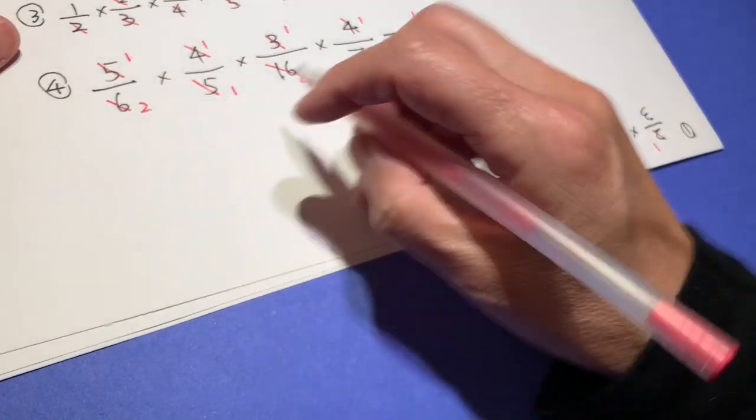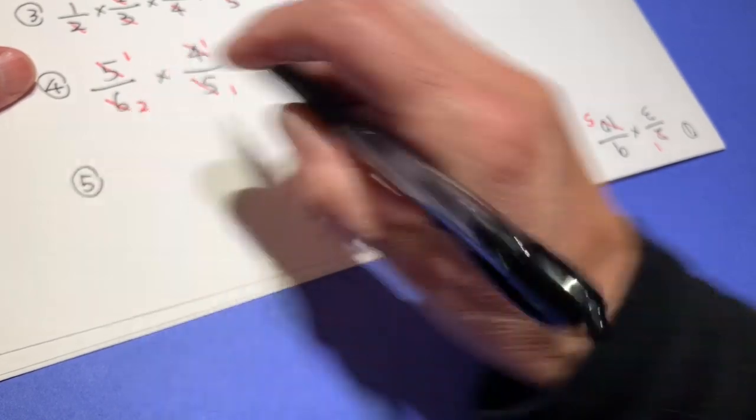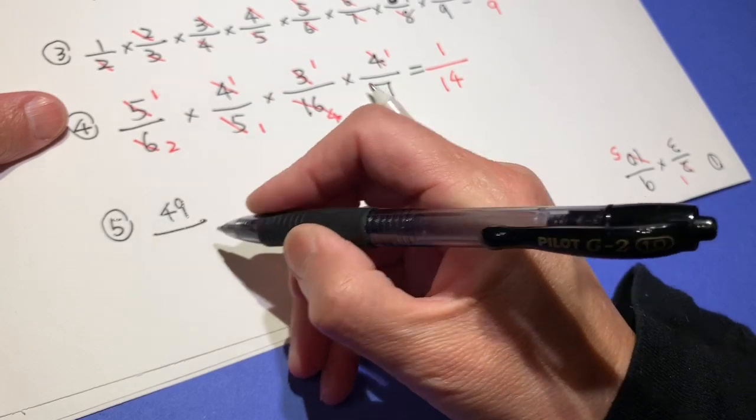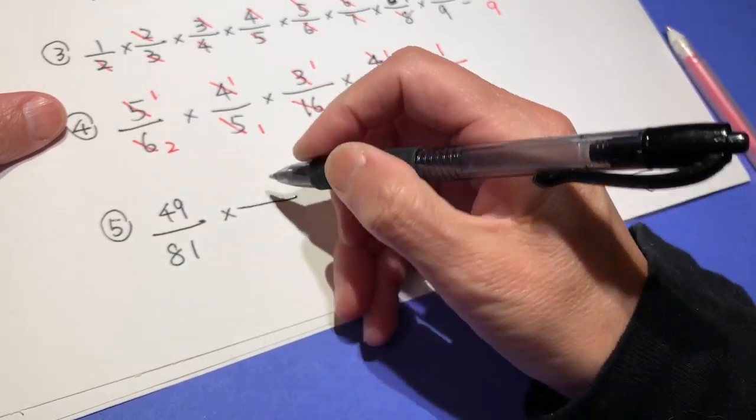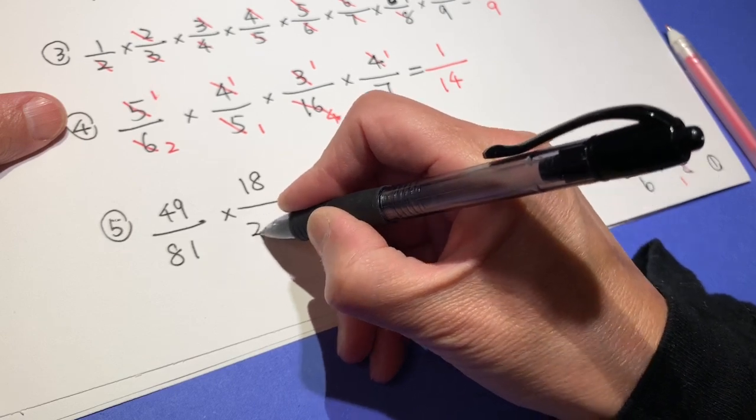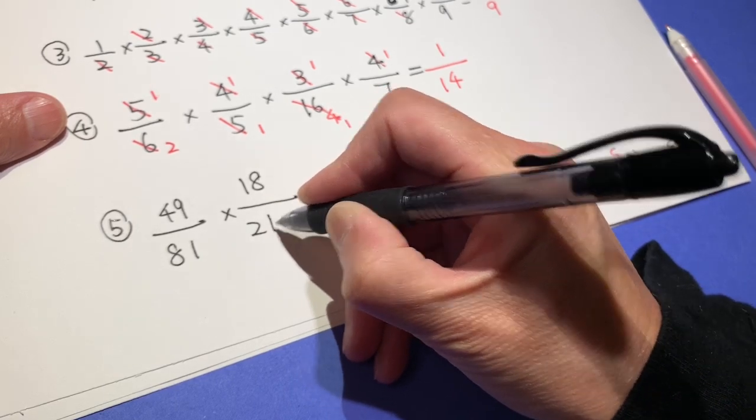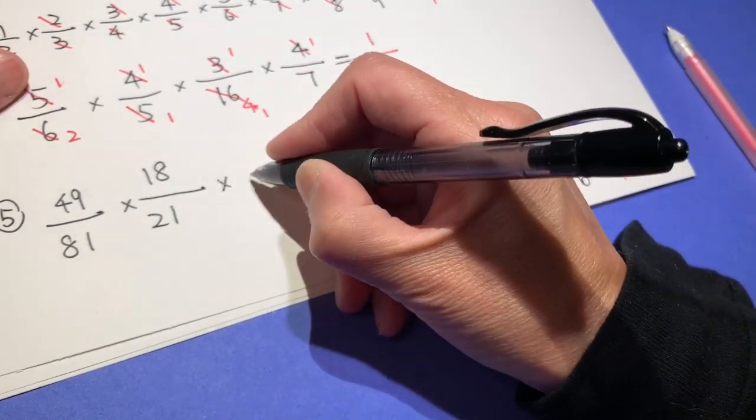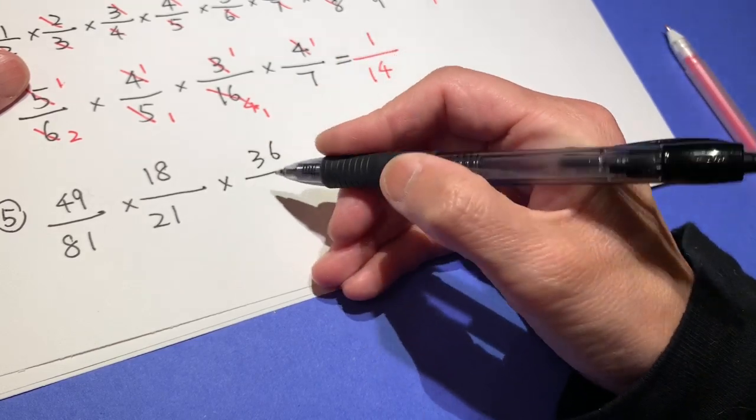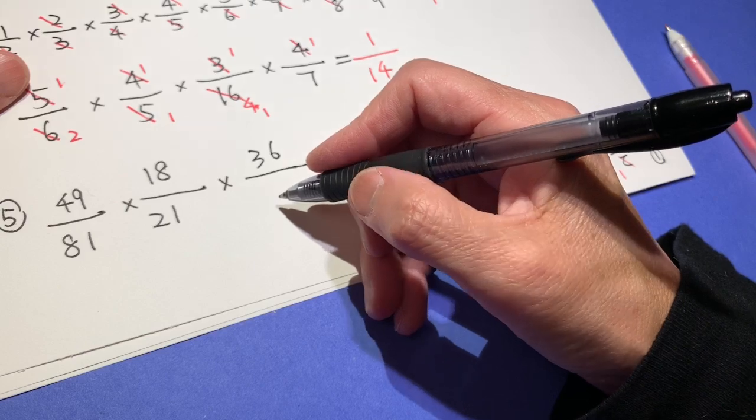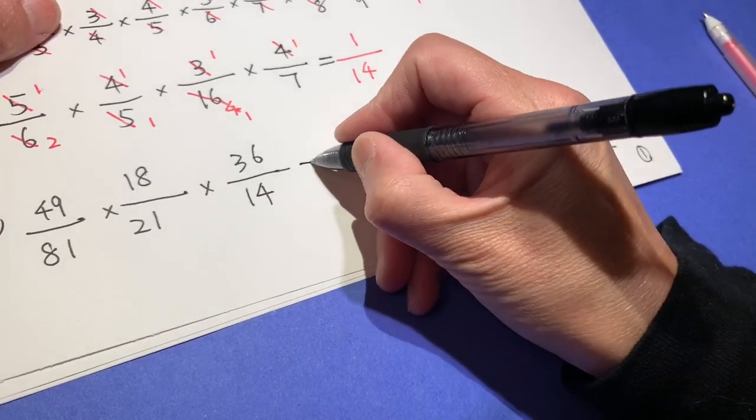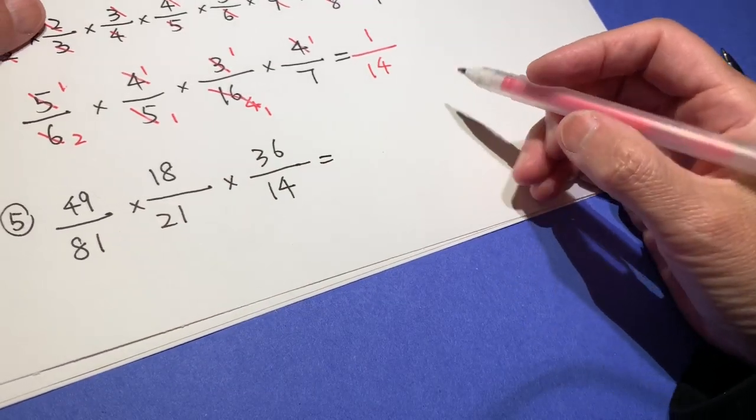Okay, now let's try another one. It's kind of fun, right? So we will bring some larger numbers. 49 over 81 times 18 over 21. This you can simplify already, actually. Times 36 over 14.